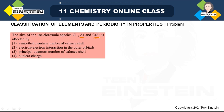Different properties are mentioned in the options: the first is the azimuthal quantum number of the valence shell; then electron-electron interaction in the outer orbitals; then the principal quantum number of the valence shell; and finally nuclear charge.